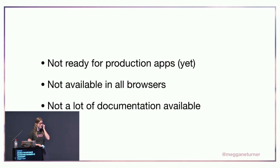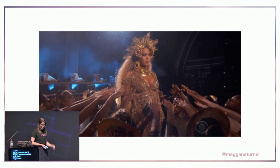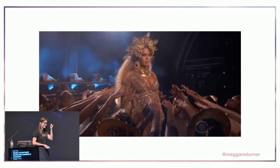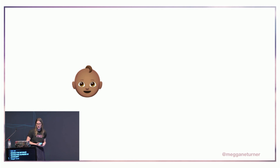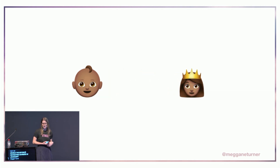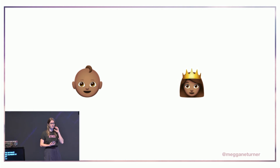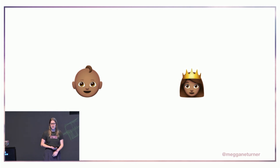BigInt is not yet ready for production apps — it's not available in all browsers and there's not a huge amount of documentation available. What I think is most exciting about this is that this problem didn't even exist when JavaScript was created, like 23 or 24 years ago. JavaScript is kind of still like a baby in terms of what it can do, but some babies grow up to be Beyoncé. I think it's really cool to be working in an ecosystem that is constantly evolving, growing, learning, and fixing its mistakes.